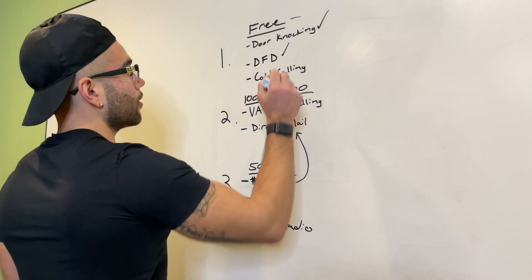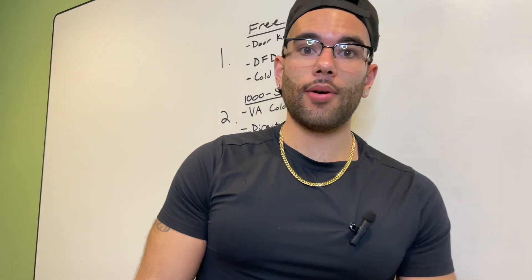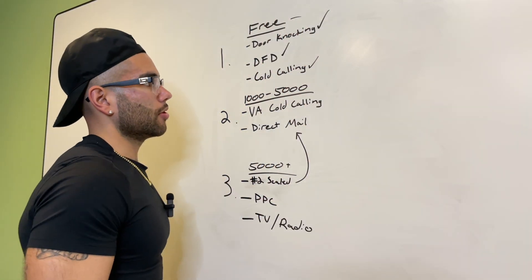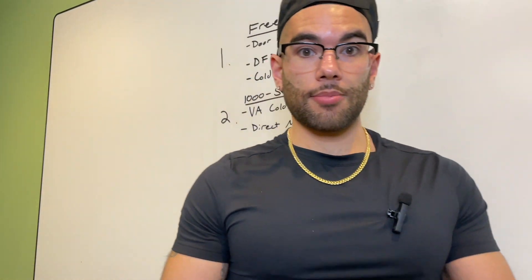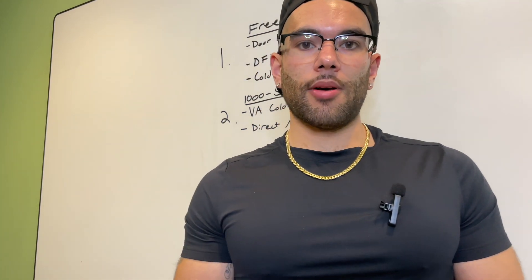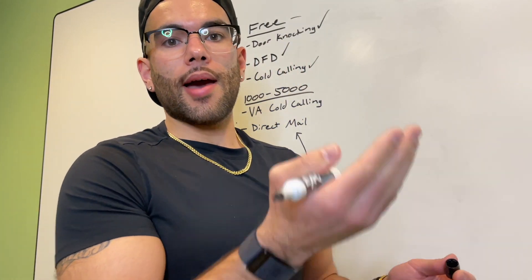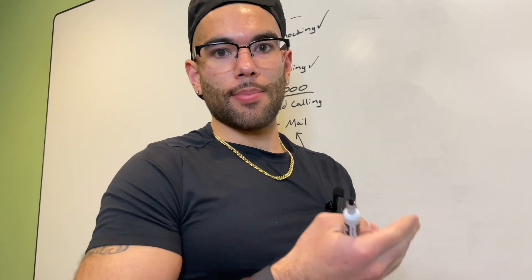You can also drive for dollars. Instead of getting out of the car and actually knocking on the door, just take down their address. Then you're going to go back and cold call these people. You'll need to do what we call skip tracing, which means you go get their contact information — their phone numbers, their email addresses. That costs a little bit, but you can go on free websites like TruePeopleSearch.com and get this information for free.